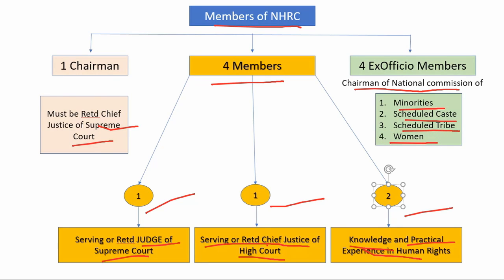Now, what does ex officio member mean? This means they are not appointed separately. When they become the chairman of their respective commission, they automatically become a member of the National Human Rights Commission.